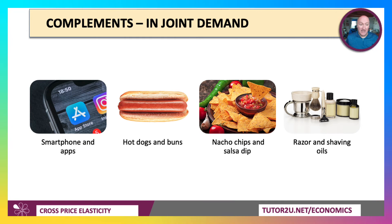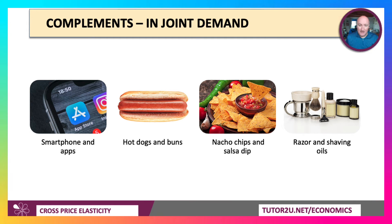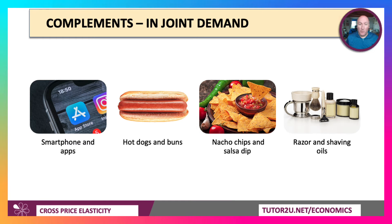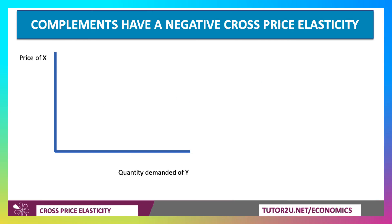Examples of complements include smartphones and apps, hot dogs and buns, nachos chips and salsa dip, and razors and shaving oils. All of these have a complementary relationship with a negative cross-price elasticity of demand.